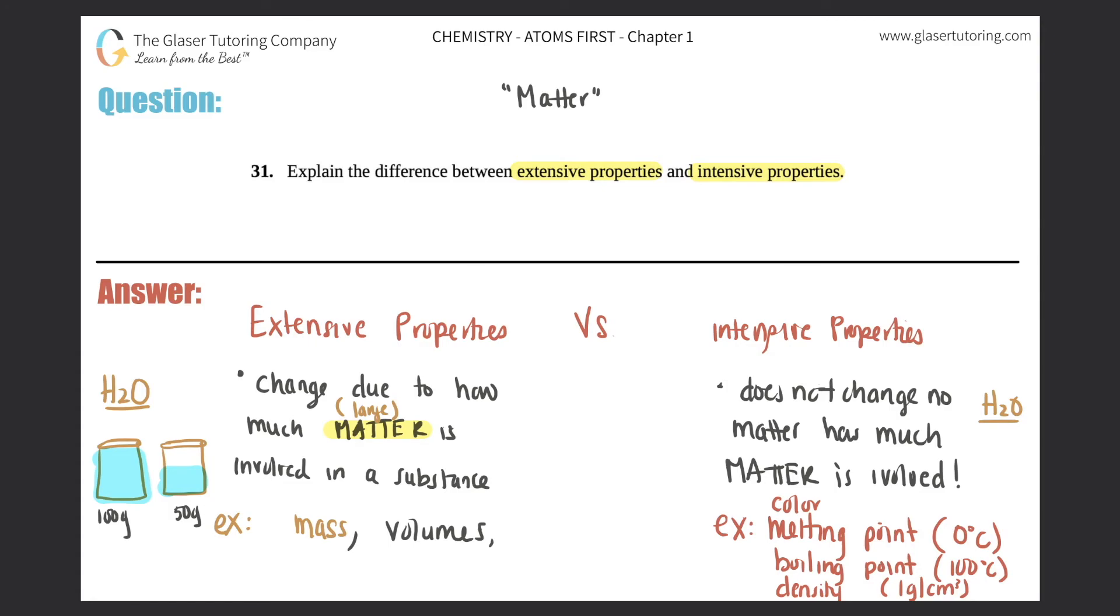One other extensive property that you guys should know is heat. Now heat is not the same as temperature. Temperature is actually an intensive property. Heat, however, how much heat energy is given off depends on how much you have. If you have a large amount of a certain substance, you will generate much more heat than if you had a small amount.